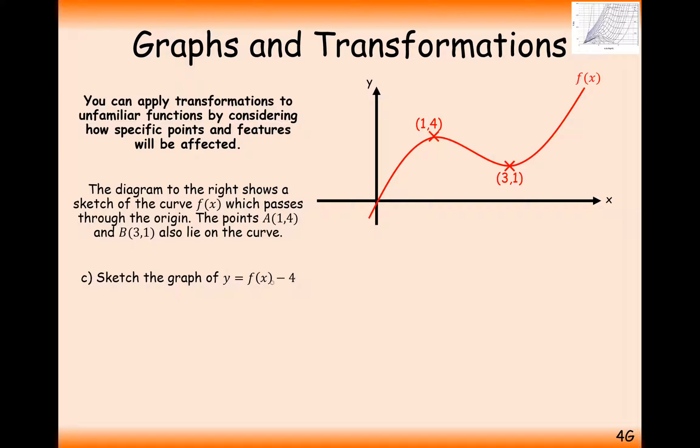The next coordinate we're going to work with is f of x, minus 4. But minus 4 this time is outside the brackets. So outside the brackets is going to represent vertical transformations, or vertical stretches as well.